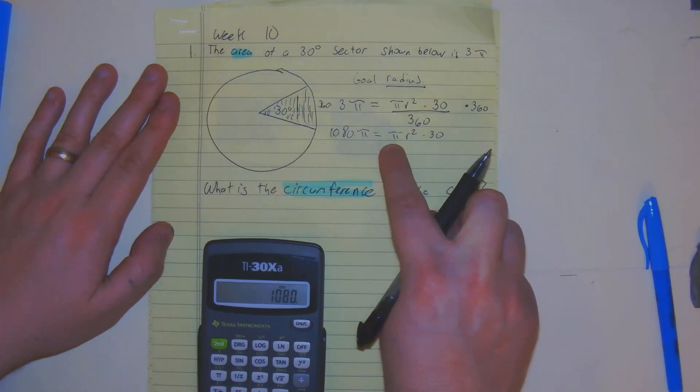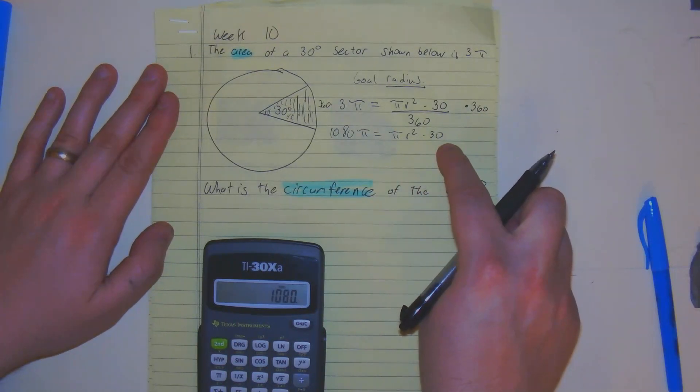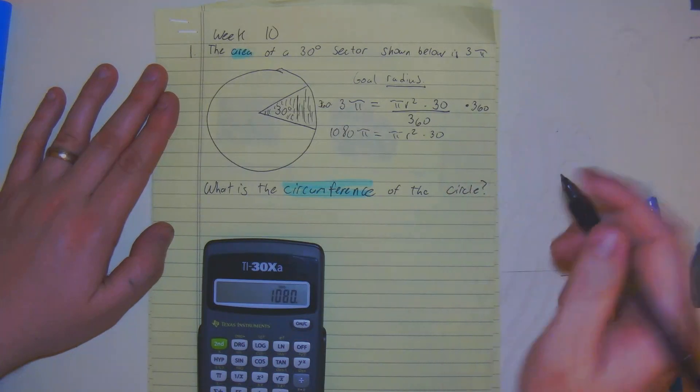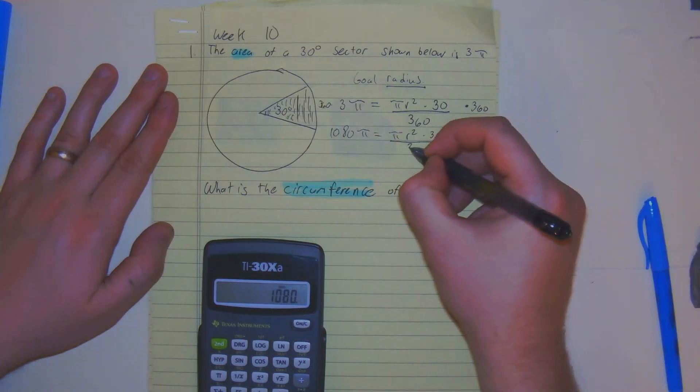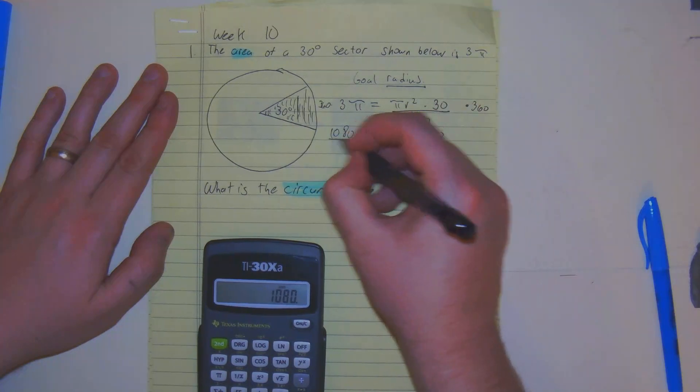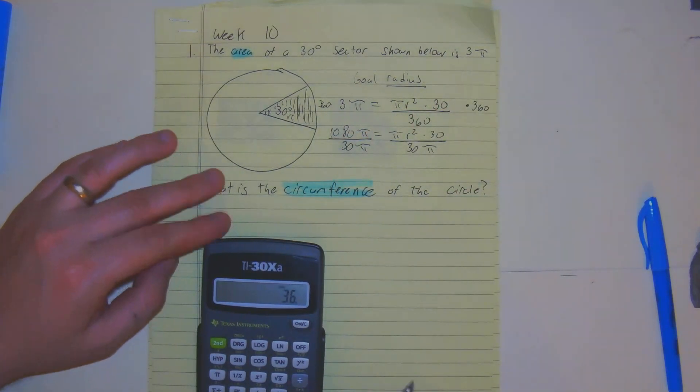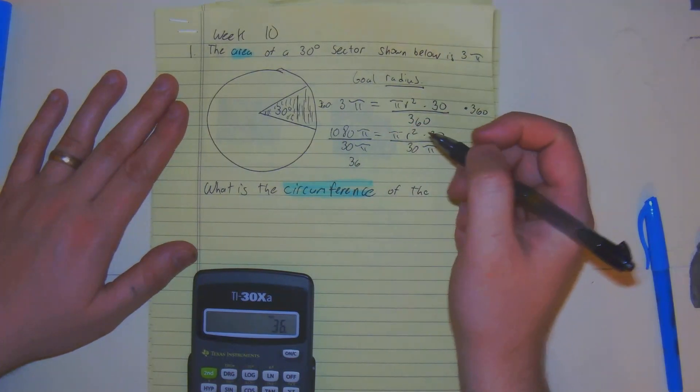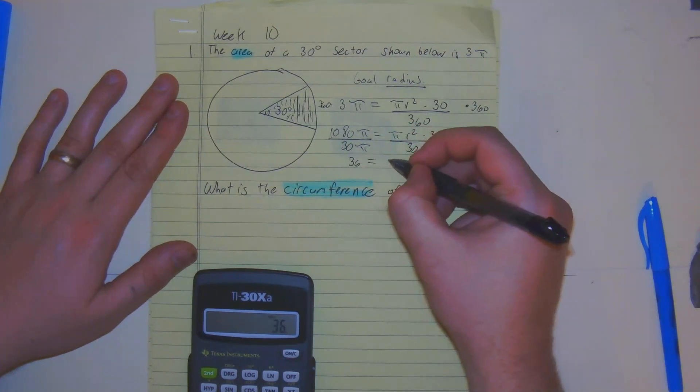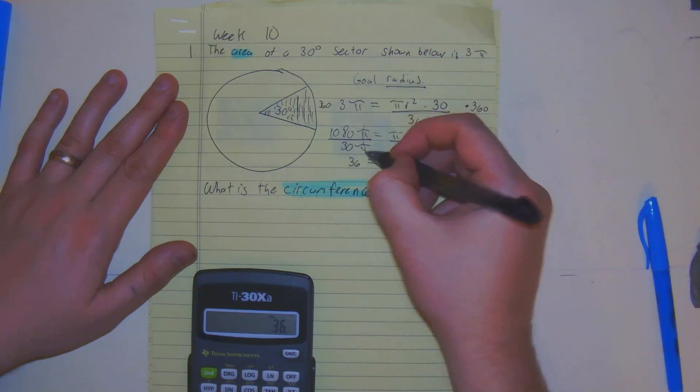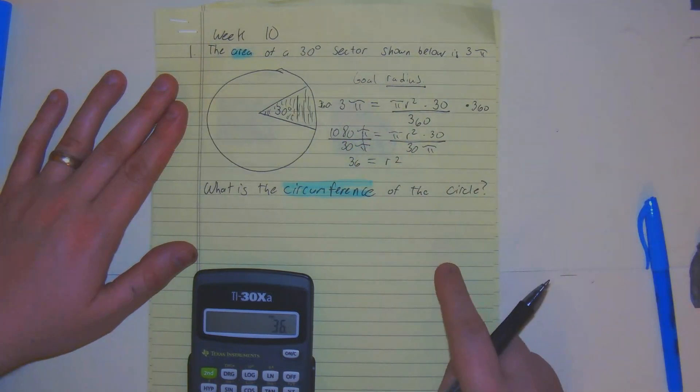From here, we have a pi and a 30 being multiplied. The inverse of multiplication is division. I'm going to divide by 30 pi on both sides. We divide by 30 and get 36 equals r squared because the pi cancels and we just do 1080 divided by 30.